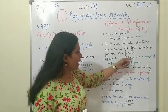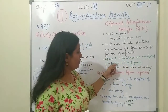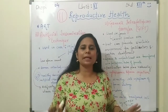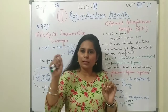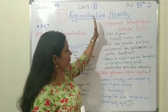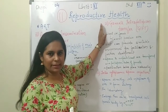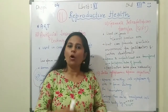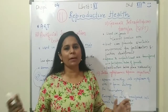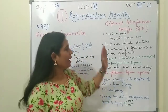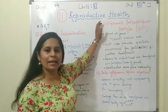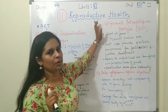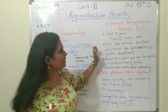Sperm and unfertilized ova are transferred to the fallopian tube of the female, and fertilization takes place naturally. In this technique, sperm and ova are simply injected into the female body, fertilization occurs naturally in the fallopian tube, and natural development of the embryo follows. This technique is for females who are not able to produce ova.